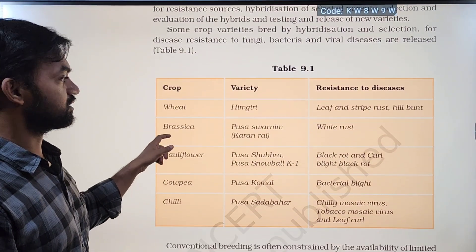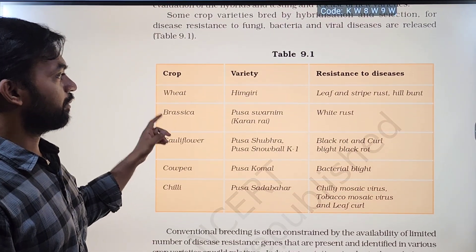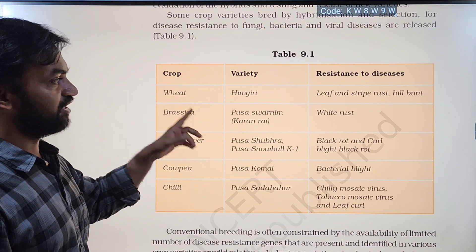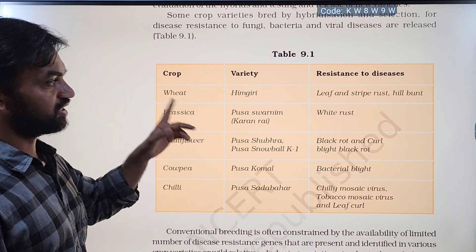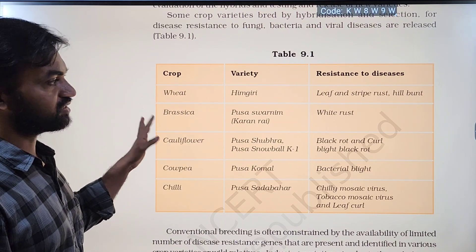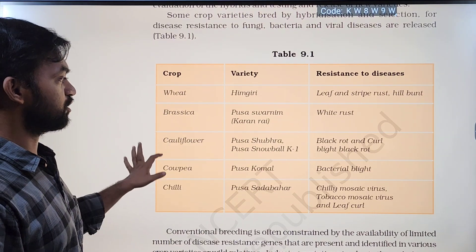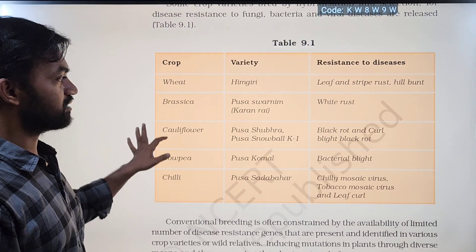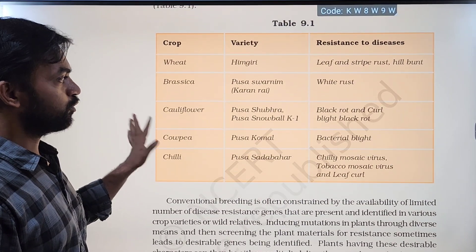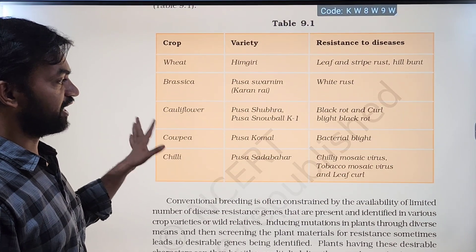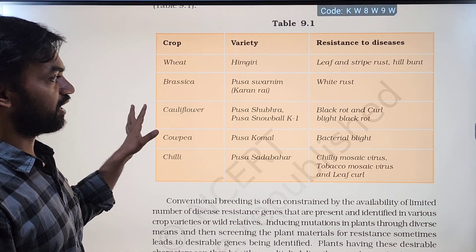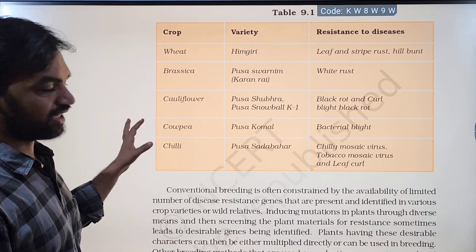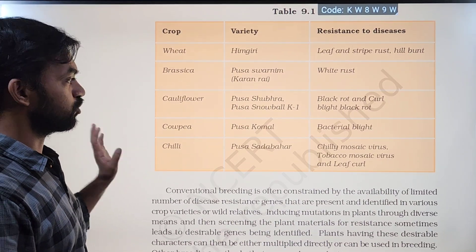Examples of disease-resistant crop varieties developed through breeding: Wheat variety Himgiri shows resistance to leaf and stripe rust as well as hill bunt. Brassica variety Pusa Swarnim and Karan Rai show resistance to white rust disease.